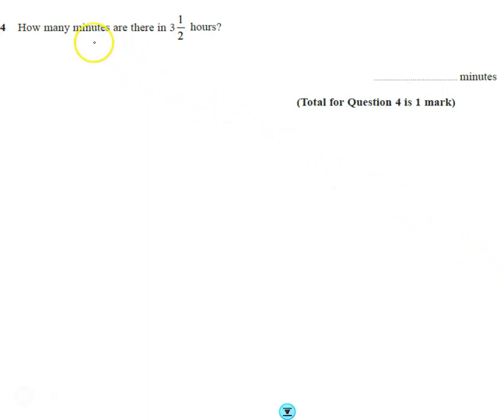Question number four is asking us to convert three and a half hours to minutes. Well, hopefully we remember that one hour equals 60 minutes, so we're going to scale it up.